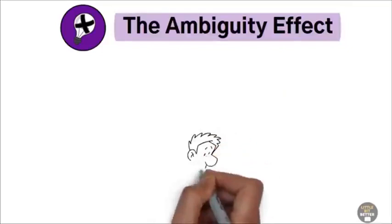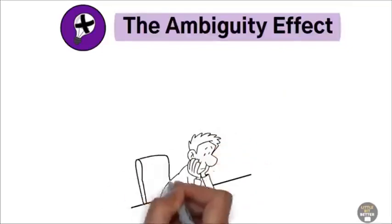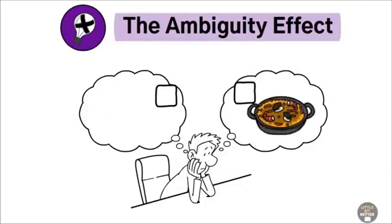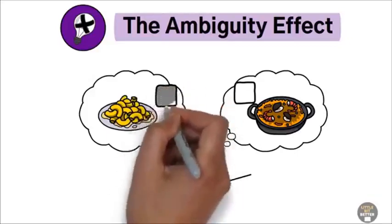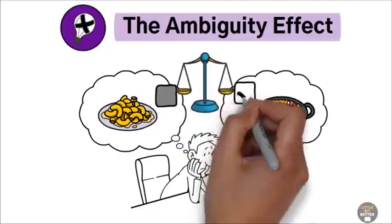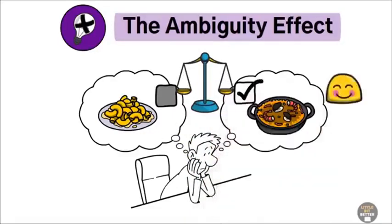The ambiguity effect. The ambiguity effect is essentially our tendency to avoid choices that are unclear, even if they might lead to better results. For example, when you are in a restaurant, instead of trying a new dish that you might end up loving, you go for the same average meal you always order. Assess the risks and benefits of ambiguous options. Sometimes taking well-calculated risks can lead to significant rewards.